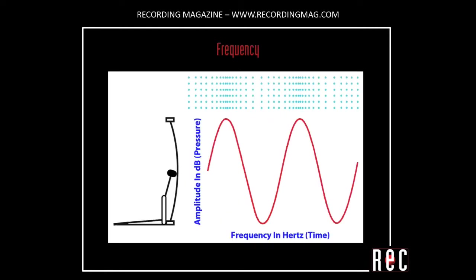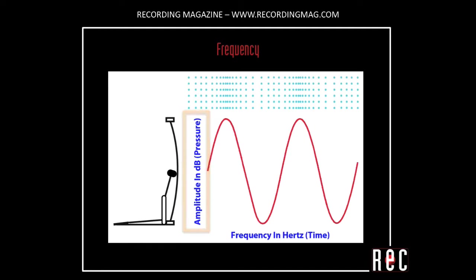Sound waves, whether in air or electrical, are quantified along two axes. First is wave amplitude, which corresponds to loudness. When graphed, the size of the wave along the vertical y-axis is its amplitude. The unit of sound amplitude is the decibel, or as us audio engineers call it, the dB.